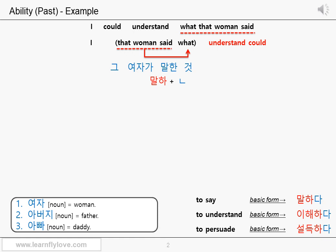말한 것을 — let's add the object particle 을. Because you can say that the entire clause is the object, or 'what' is the object of the main verb 'understand'. The basic form of the verb 'understand' is 이해하다. 이해하 is the stem. If you add the final ㄹ consonant and 수 있다 to the stem, it will mean you have an ability to understand.